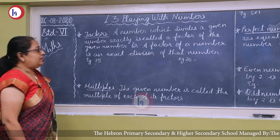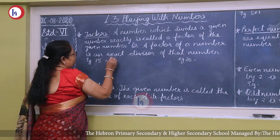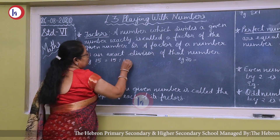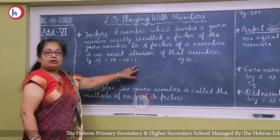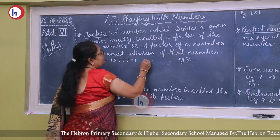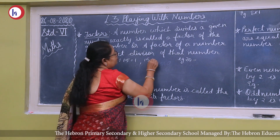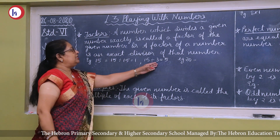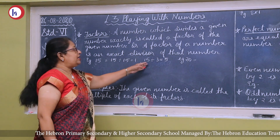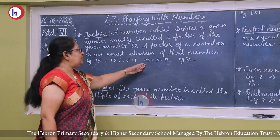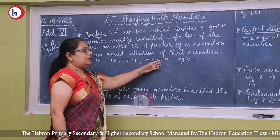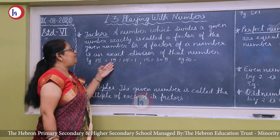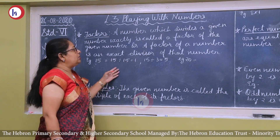For example, 15: 15 divided by 1 is equal to 15, so 1 is a factor. Next, 15 divided by 3 is equal to 5 — there is no remainder, so 3 is exactly divisible. So 3 is known as a factor. Similarly, 15 is exactly divisible by 15, so 1 is also a factor here.